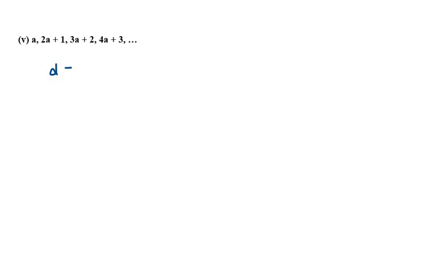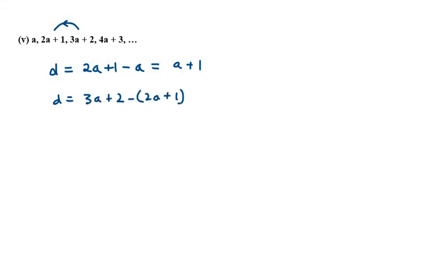The fifth part is: a, 2a+1, 3a+2, 4a+3. Let's find the difference: 2a+1 minus a gives a+1. Now we need to find the difference between the next two terms: (3a+2) minus (2a+1), which is 3a+2 minus 2a minus 1, giving a+1. The difference is the same again.